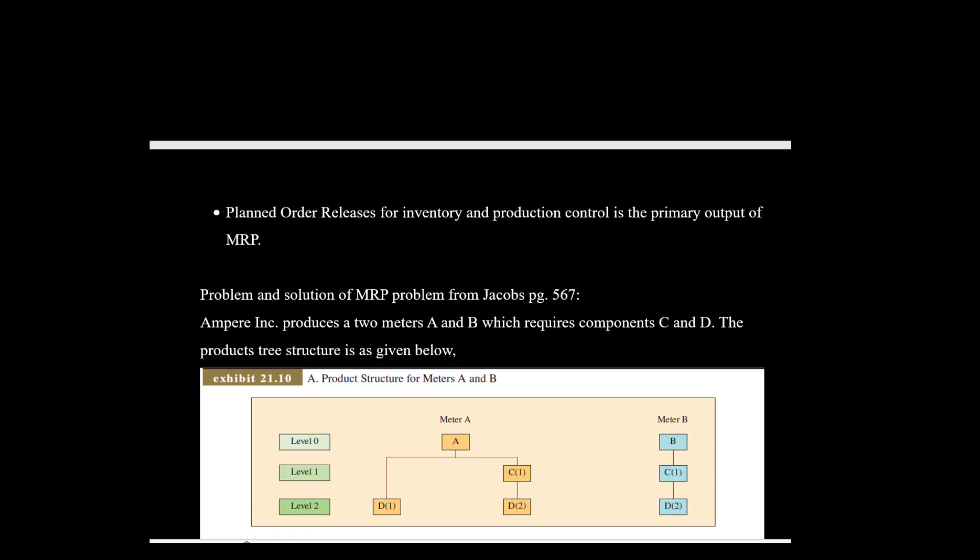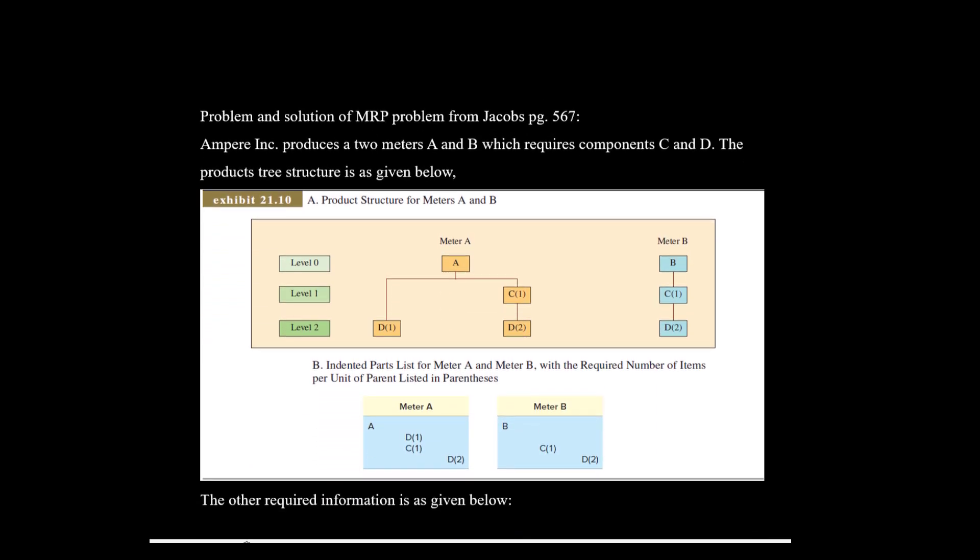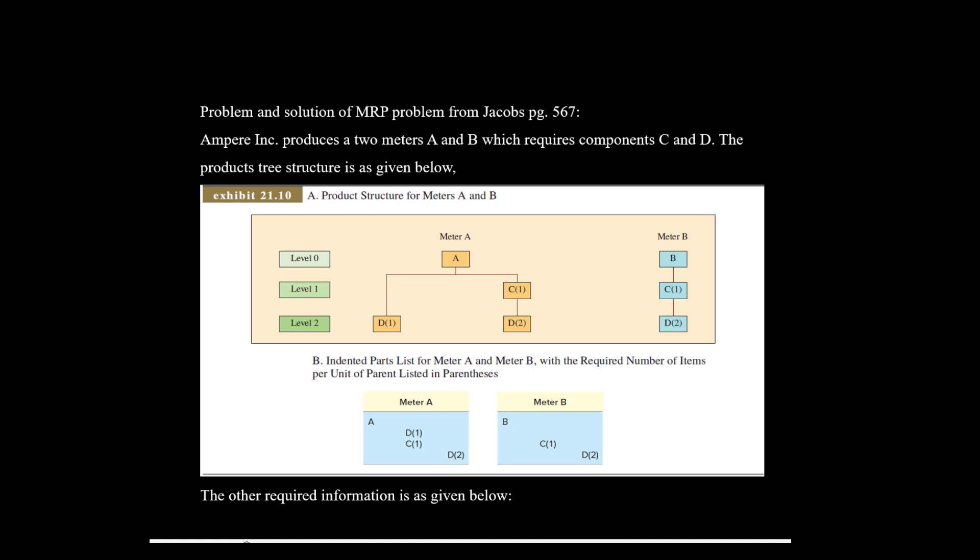The output of the MRP computer program will be the planned order releases for inventory and production control. Now let us understand with the help of an example how we proceed to do the calculations involved in MRP. This problem is from the 15th edition of Jacob's Operations Management, page 567. Ampere Incorporation produces two meters, which are household meters for tracking electricity consumption. These two meters require two components, C and D.